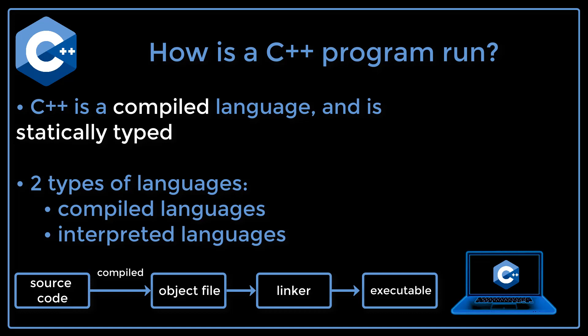Firstly, it is worth mentioning that C++ is a compiled language and is statically typed. What does this mean? In computer programming there are two types of languages: compiled languages and interpreted languages.